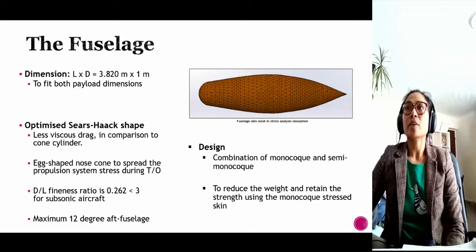After fuselage aerodynamic calculations, the Sears-Haack shape was selected. It gives less viscous drag in comparison to the cone cylinder shape.